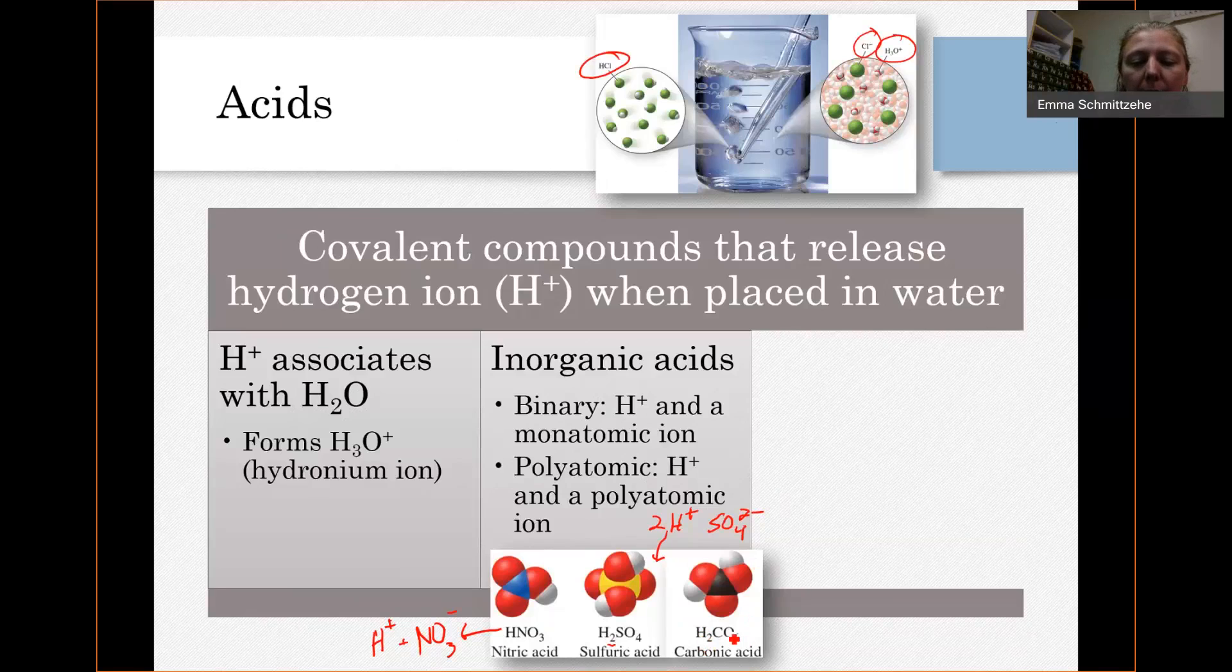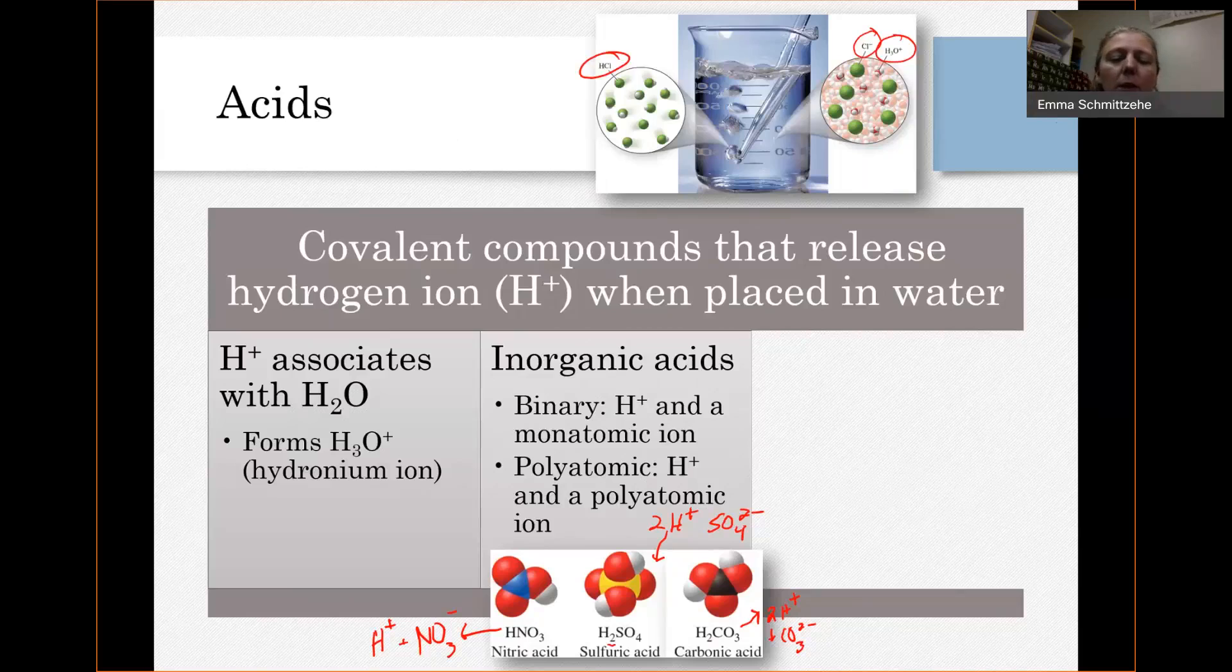And then the carbonic acid, the H2CO3, that's similar. That one can split up into H+, so two H+, and CO3 2-. That's what happens, it splits up when you place it in water. That one, like the sulfuric acid, is a little more complicated than that. But right now, I just want to get a grasp of, in general, what does it mean when we say something's an acid?